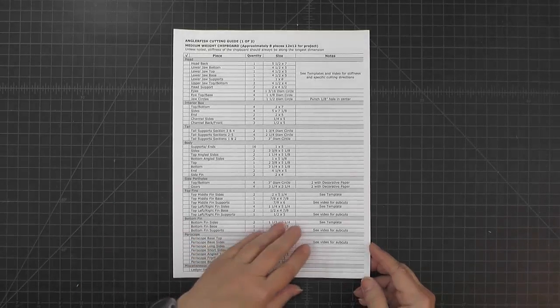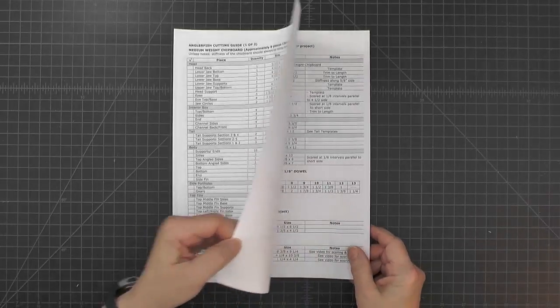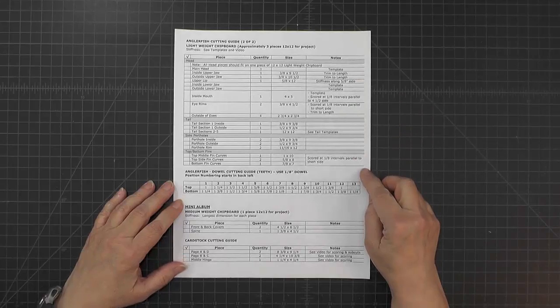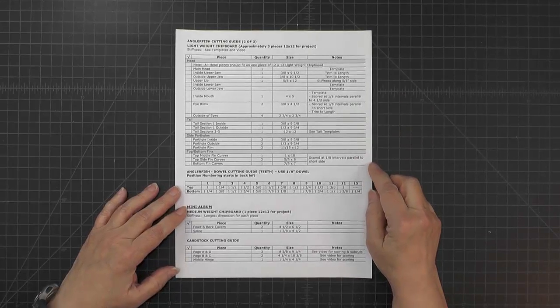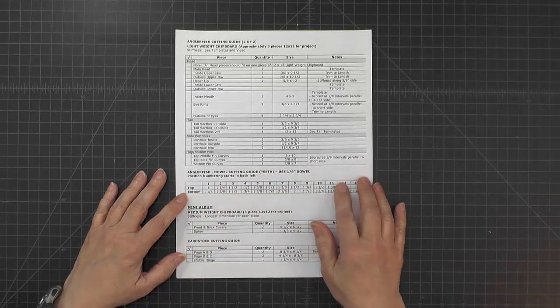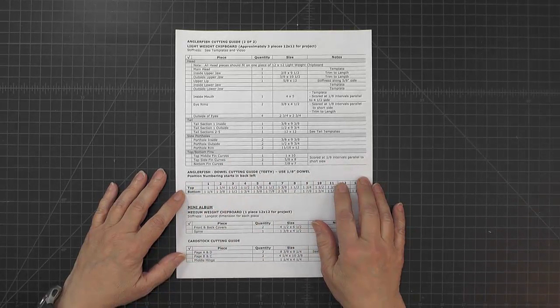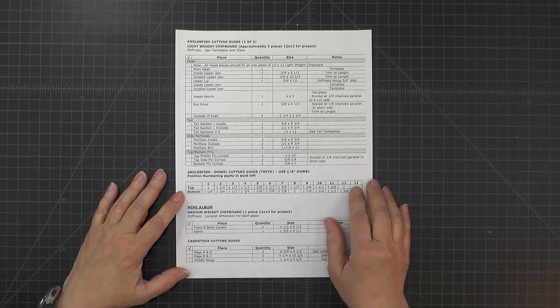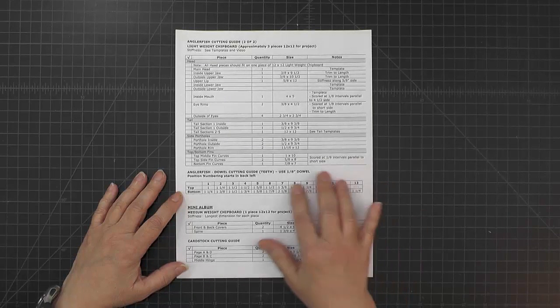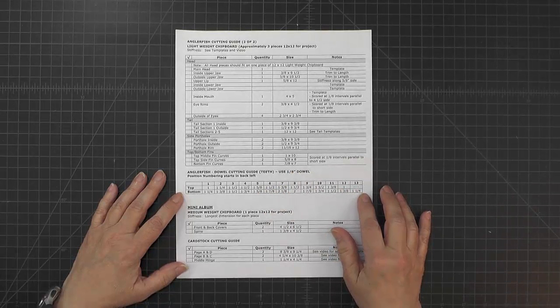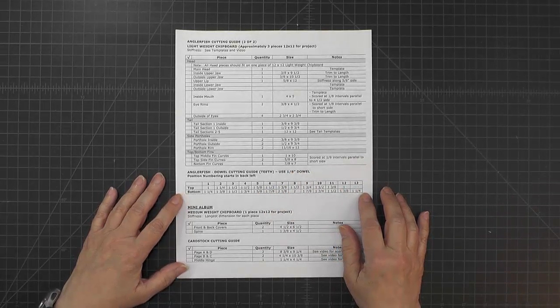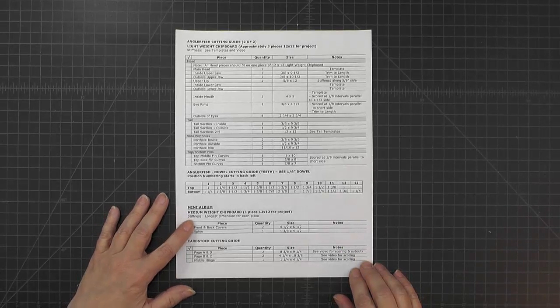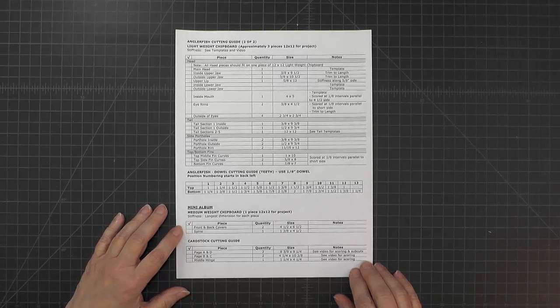On the second page lists all the medium weight chipboard, and as the videos proceed I mention each section and what will be cutting from here. And then on the third page there are several things. The first is the lightweight chipboard and then the next is the dowel cutting guide.